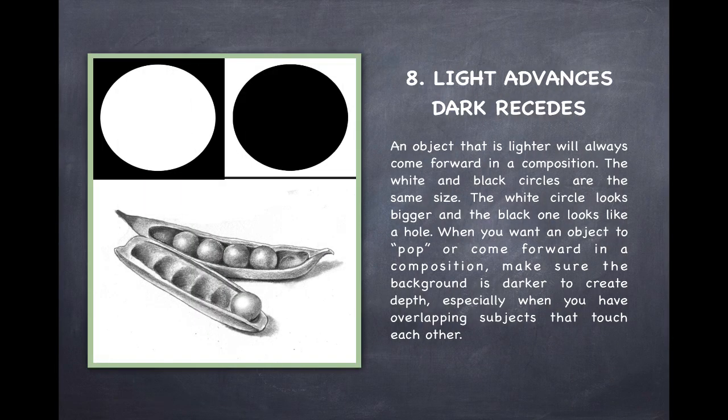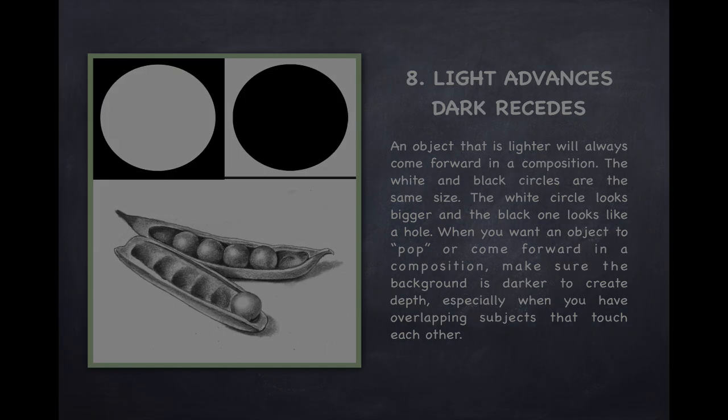Number eight, remember that light advances and dark recedes. An object that is lighter will always come forward in a composition. Here, the white and the black circles are exactly the same size. The white circle looks bigger and the black one looks like it's a dark hole. When you want an object to pop or come forward in a composition, make sure the background is darker to create depth, especially when you have overlapping subjects that touch each other.